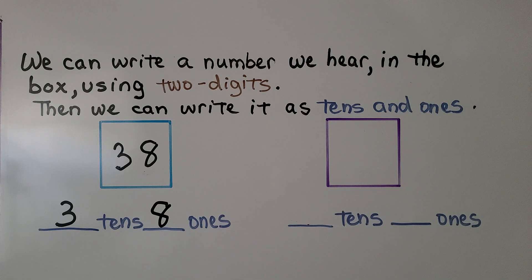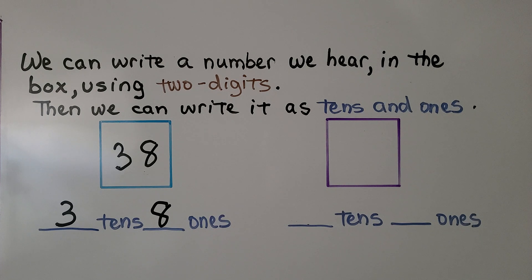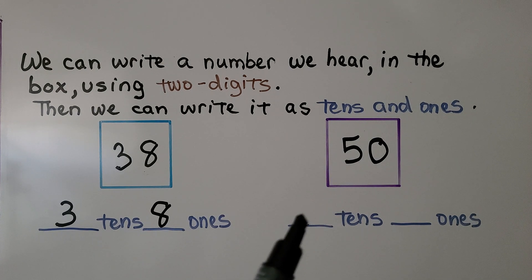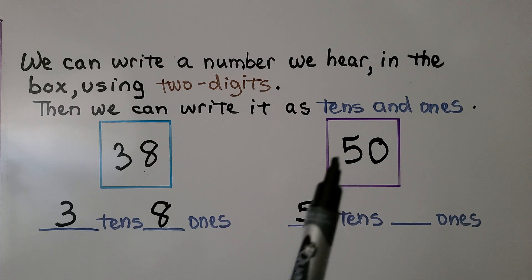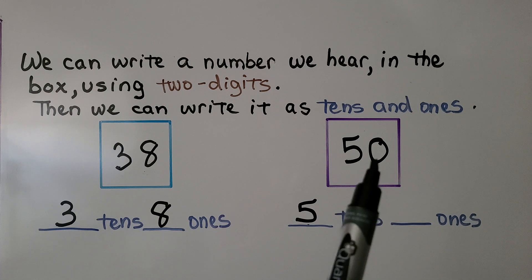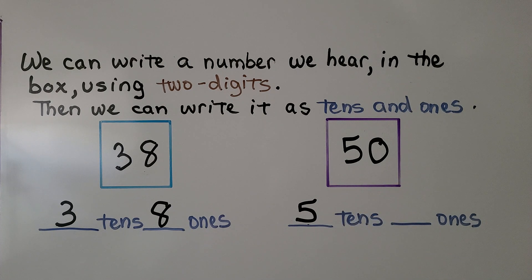If I said the number 50, we could write 50 in this box. 50 is 5 tens, because there's a 5 in the tens place, and 0 ones, because there's a 0 in the ones place.